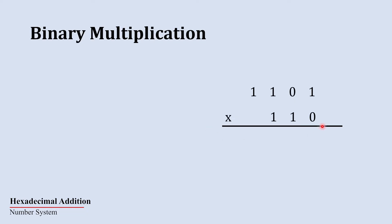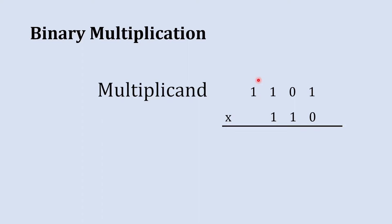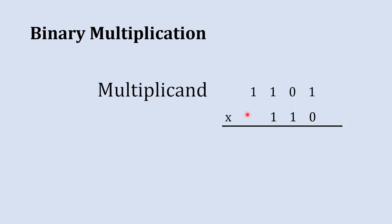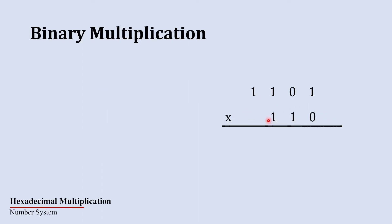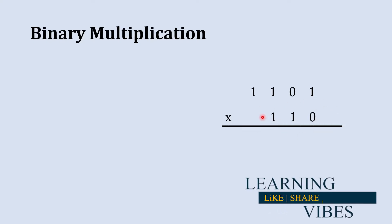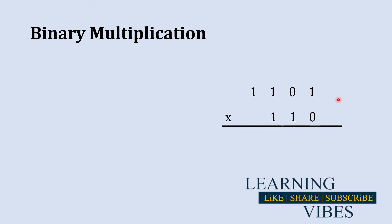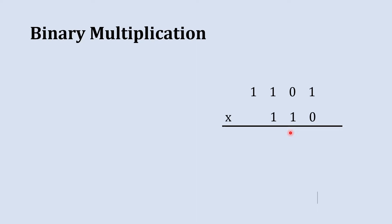Here we have two numbers which we are going to multiply together. This 1101 is the multiplicand and 110 is the multiplier. Basically multiplicand means the quantity which is to be multiplied by another quantity, and that other quantity is the multiplier.